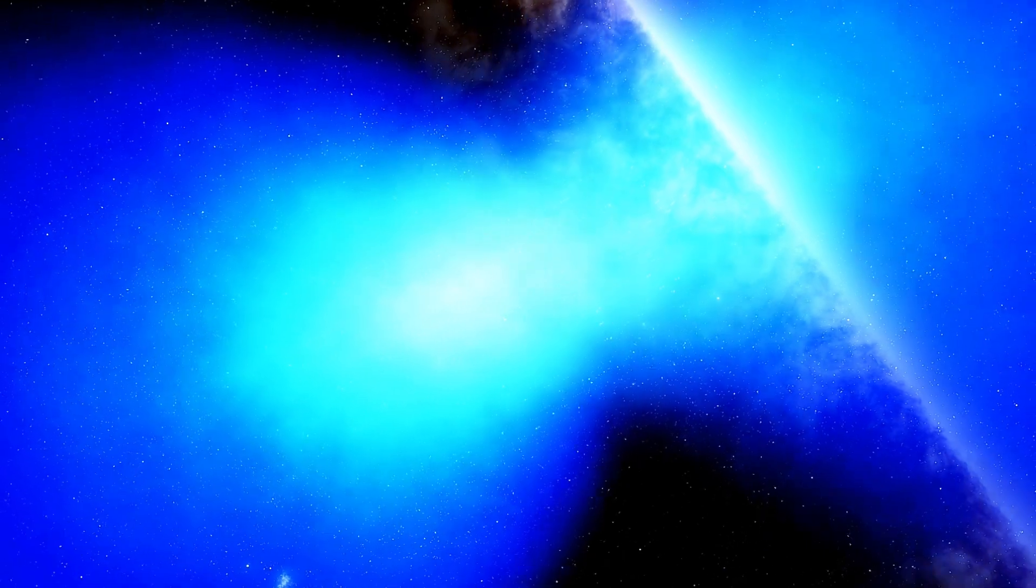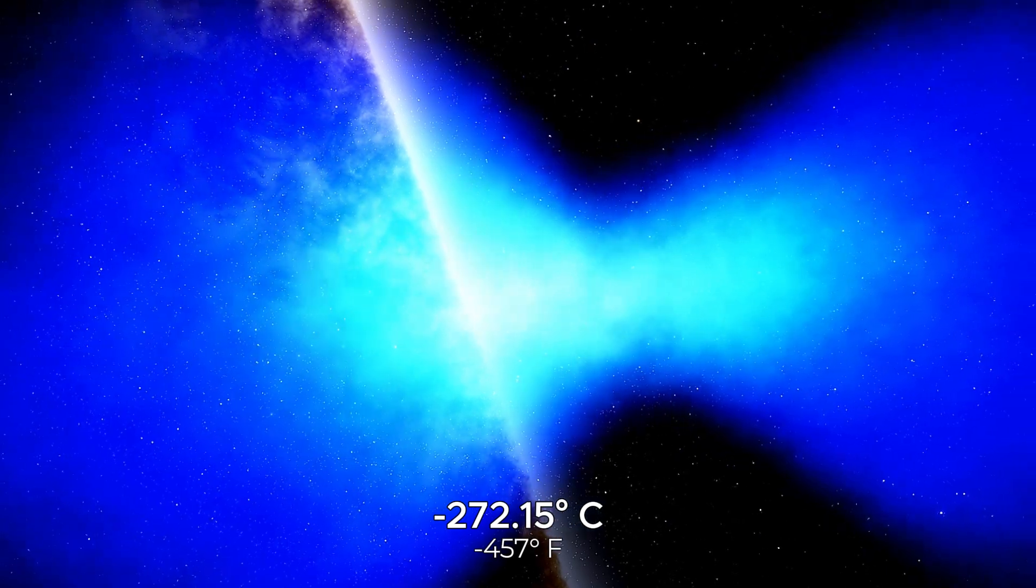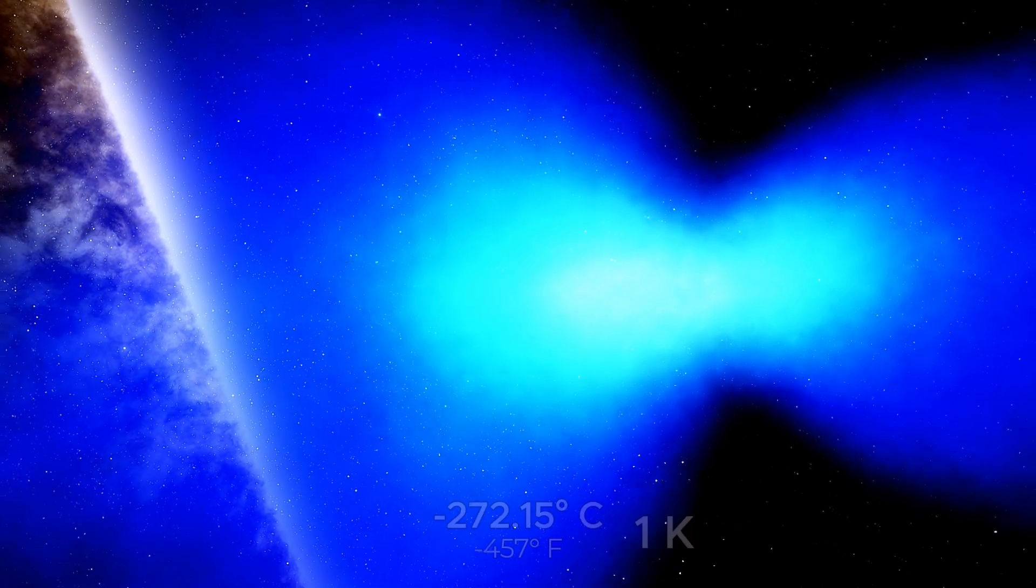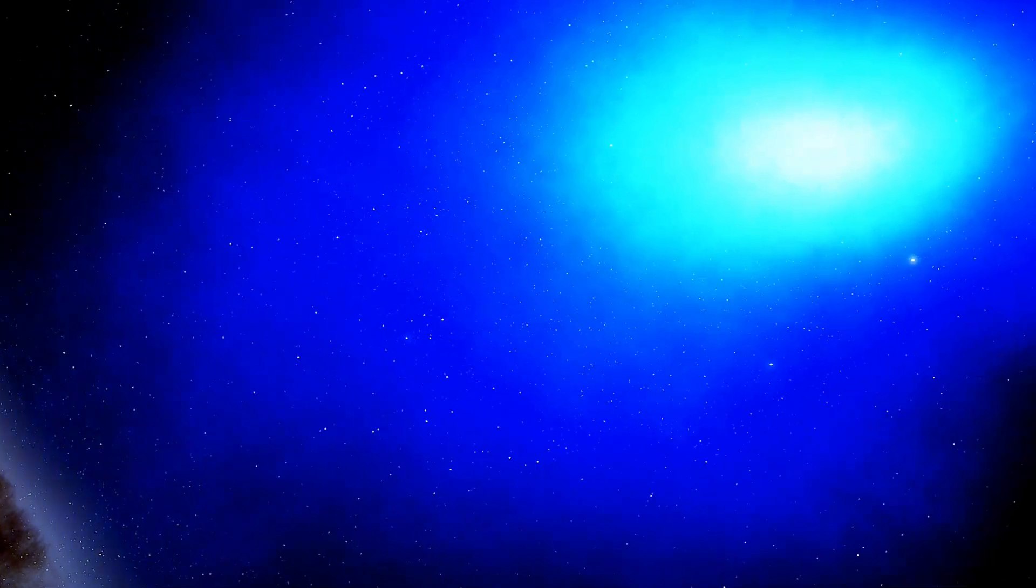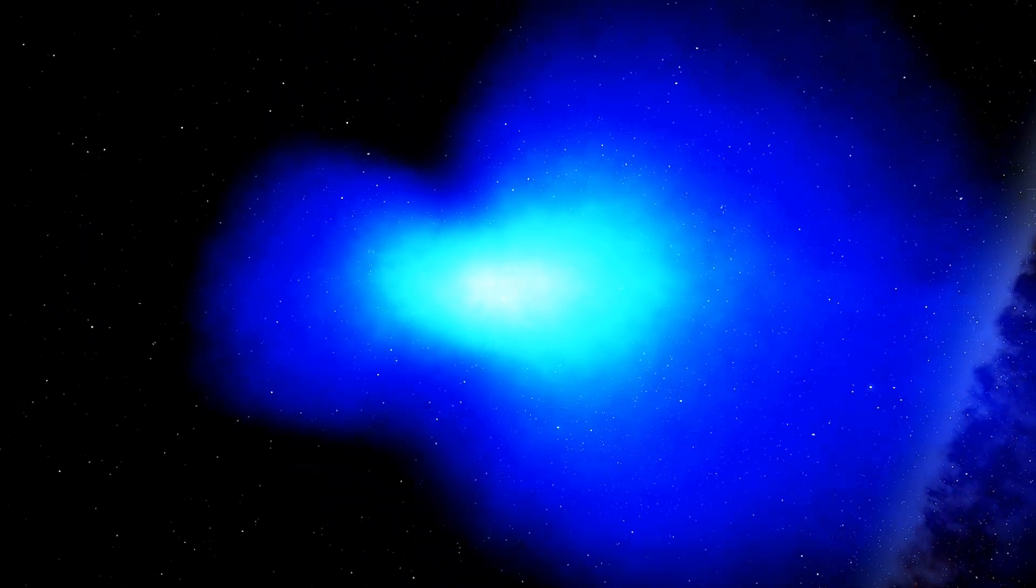The region of the Boomerang Nebula records the lowest temperatures ever observed in nature. The gases in the nebula reach a staggering minus 272 degrees Celsius, just one degree above absolute zero. This makes the nebula colder than the background radiation of the universe, an almost unimaginable feat. High temperatures indicate that atoms are packed closely together and move at high speeds. At low temperatures, particles move much more slowly and with far less energy. Absolute zero is the lowest temperature possible in nature, where particles have the least amount of energy they can achieve.